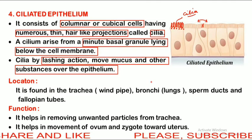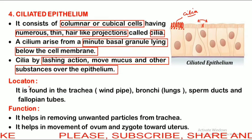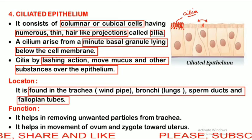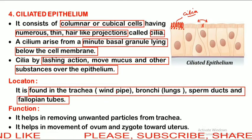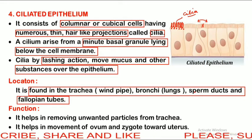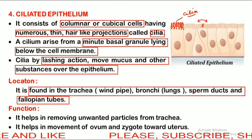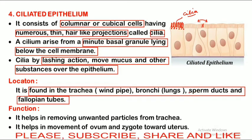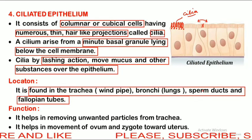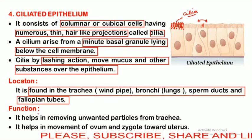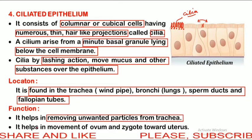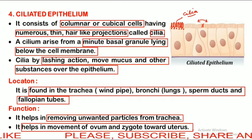Cilia show a lashing action, moving mucus and other substances over the epithelium. They are found in the trachea, windpipe, bronchi, sperm ducts and fallopian tube. In the trachea, unwanted material is pushed out by these cilia. In the sperm ducts such as epididymis, seminiferous tubules and vas deferens, ciliated cuboidal epithelium moves sperms towards the genital organ. In the fallopian tube, it helps in the movement of the ovum and zygote towards the uterus. Its function is removing unwanted particles from the trachea and moving the ovum and zygote towards the uterus.